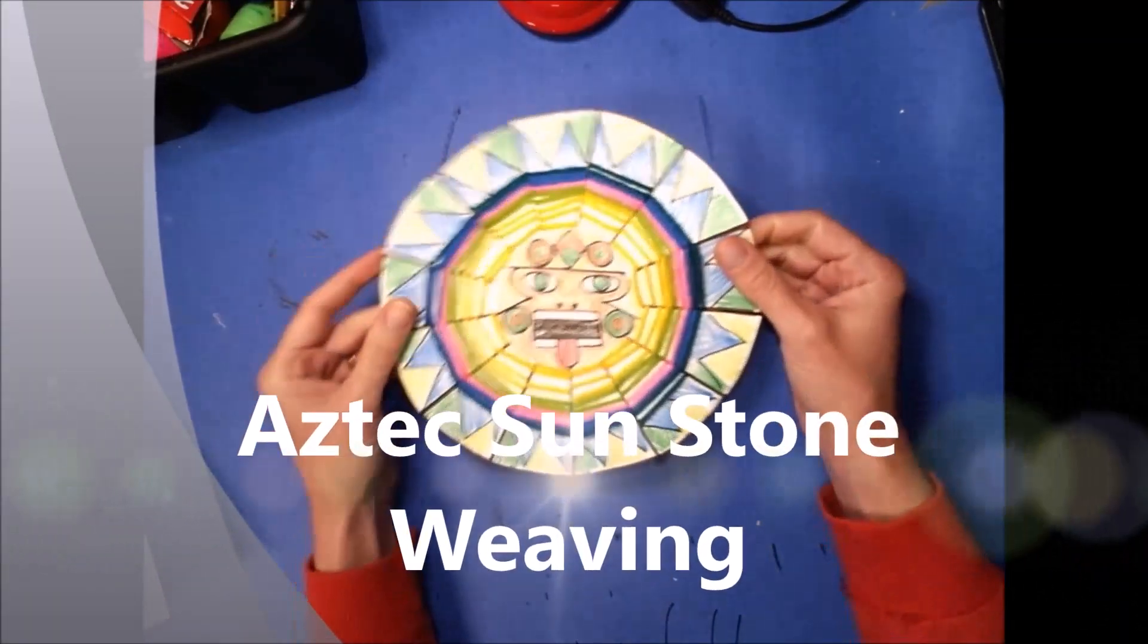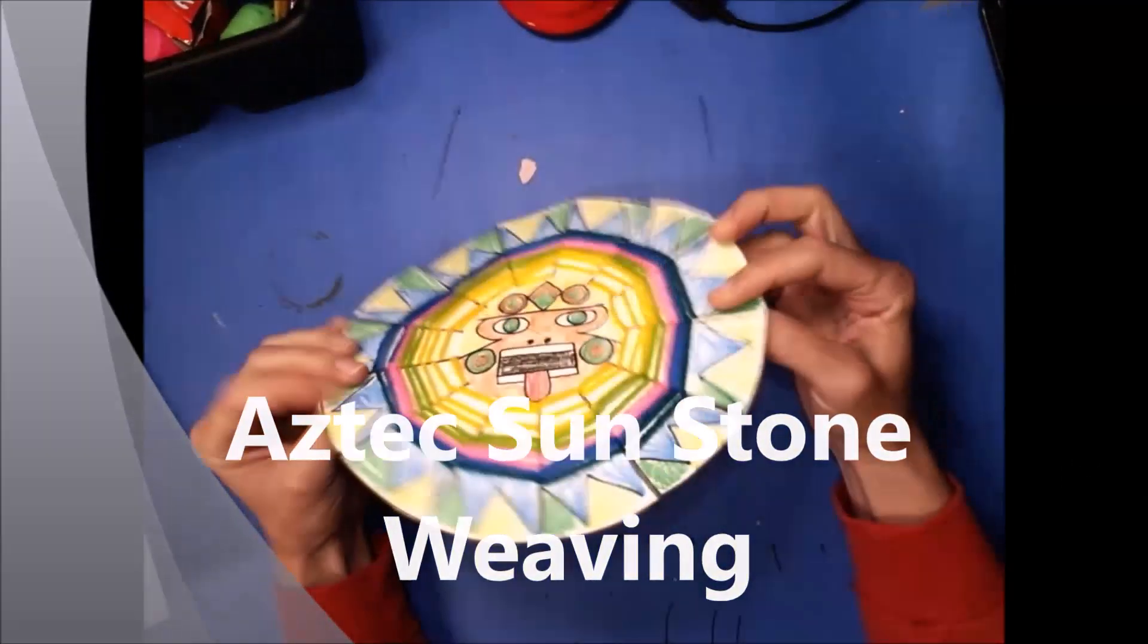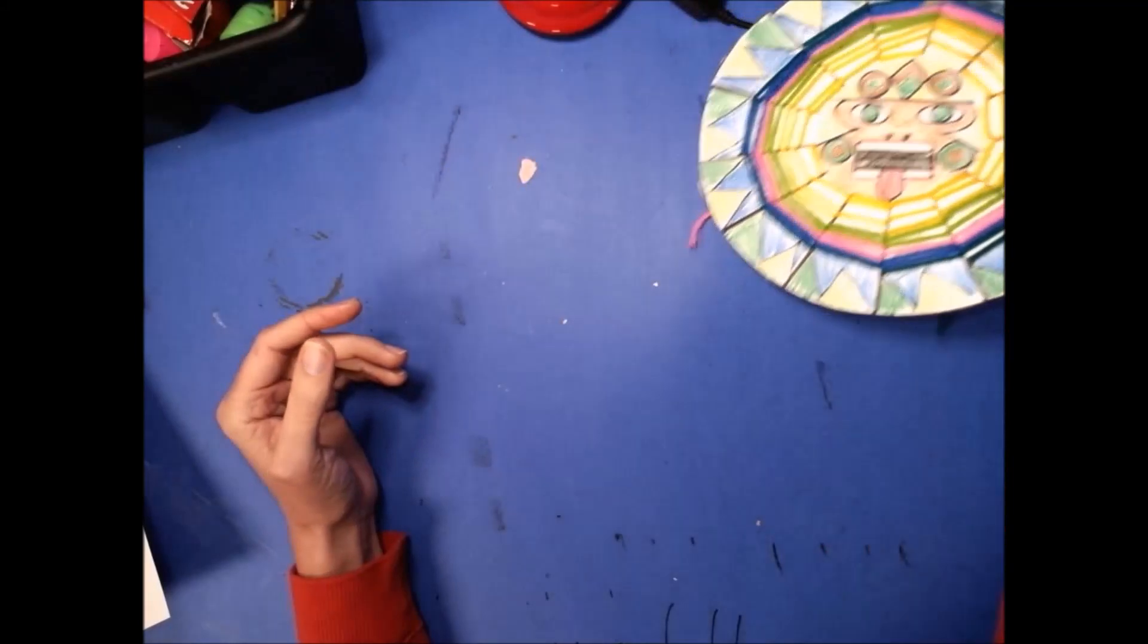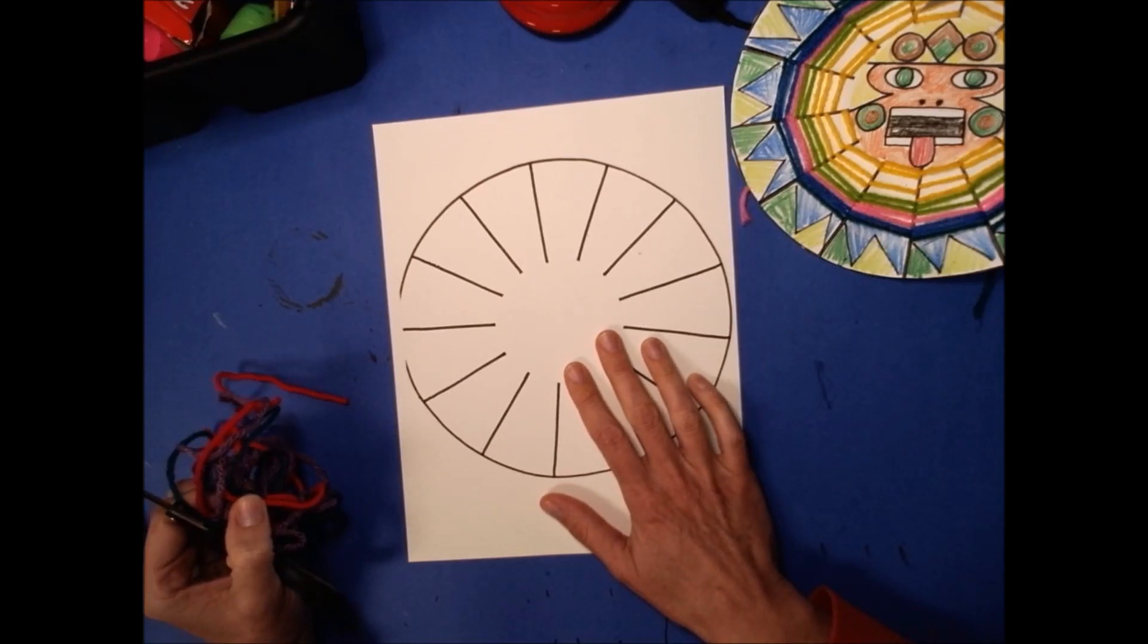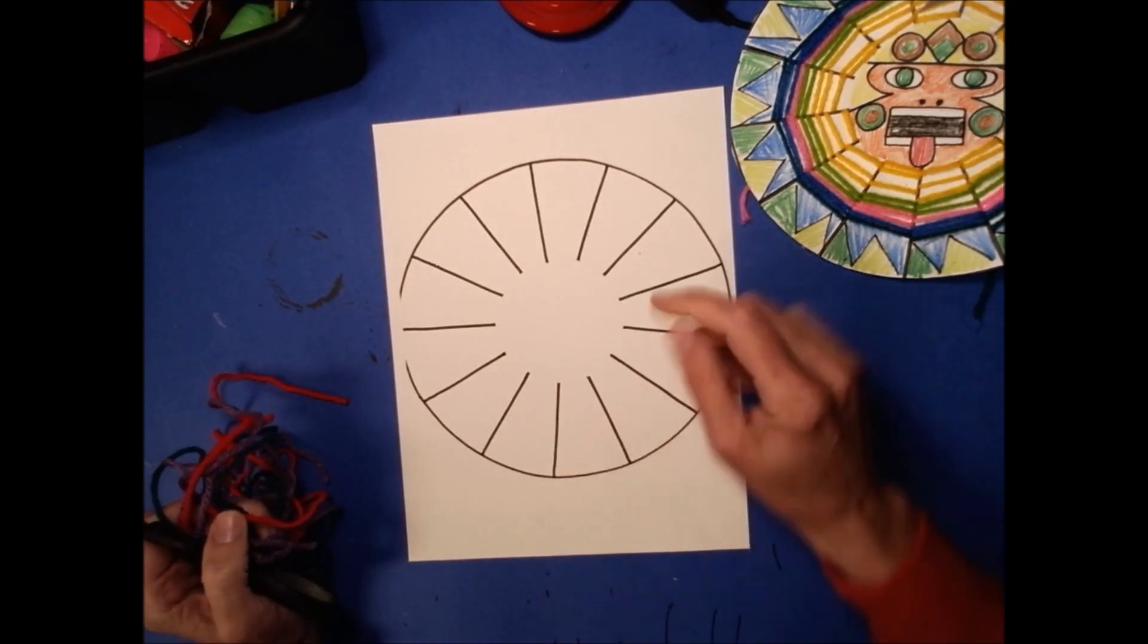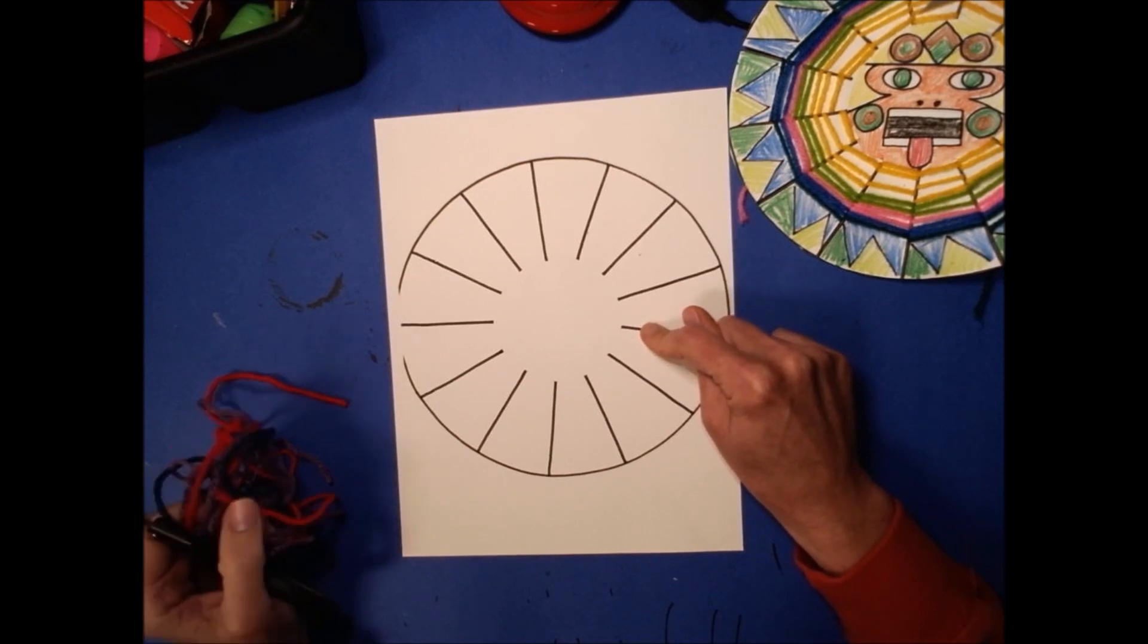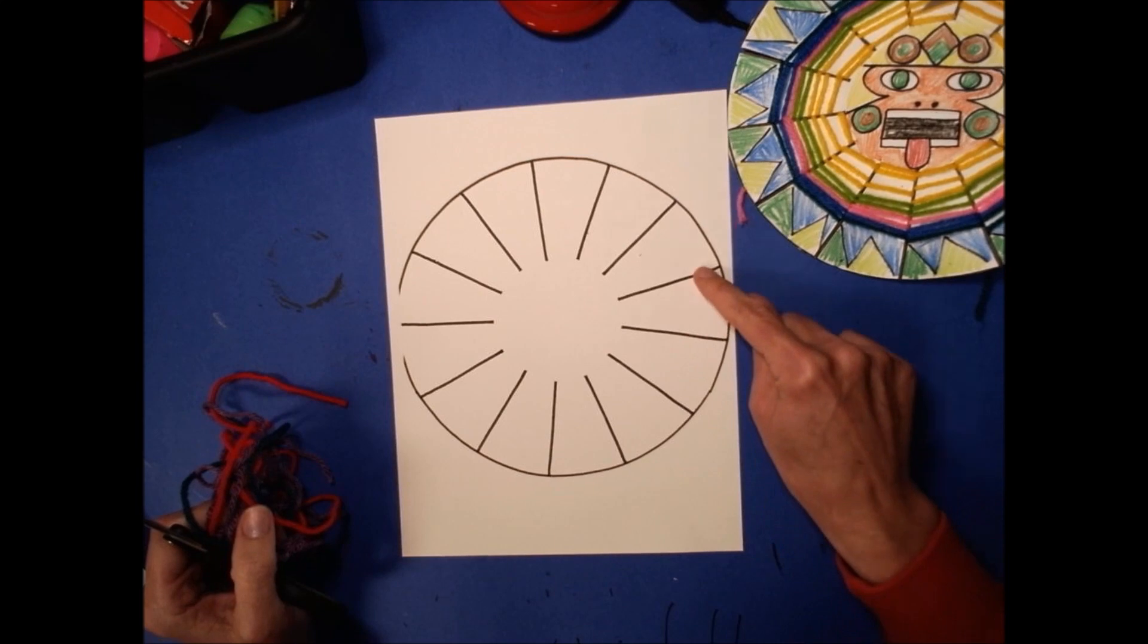Hey y'all, today we're gonna make an Aztec Sun circular weaving and it's very easy. You can do it at home or at school. I've got a template cut out or drawn out for you to cut out. If you don't have one of these, you can use a paper plate. The trick is we need an odd number of lines going around, so that's gonna help keep our weaving pattern going.